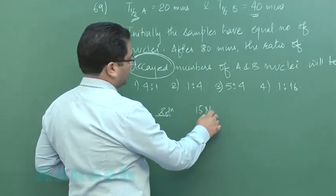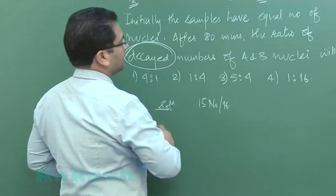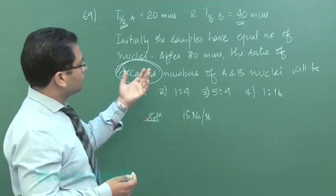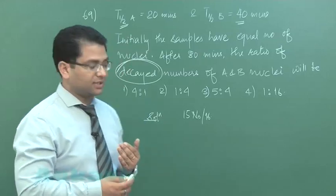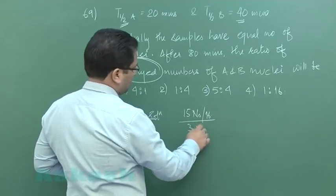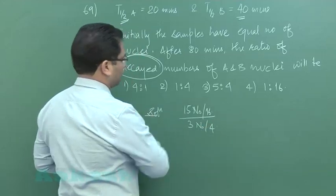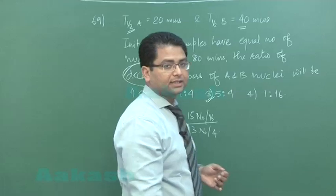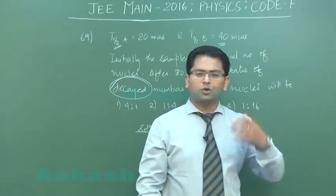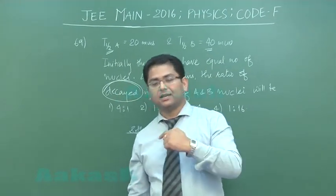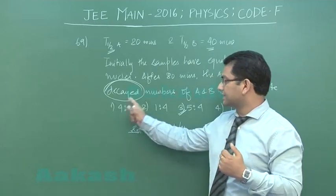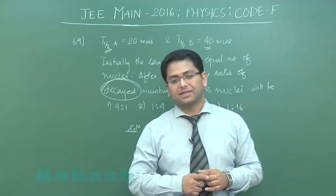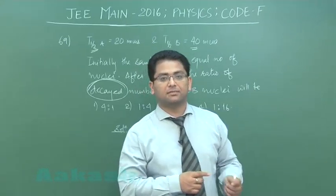After four half-lives, one by sixteen would be remaining, so the decayed one would be fifteen by sixteen. For the second, after two half-lives, one-fourth would be remaining, so the decayed one would be three by four. That straightaway gives us option number three as the correct option. The question has asked the decayed one, not the remaining one.